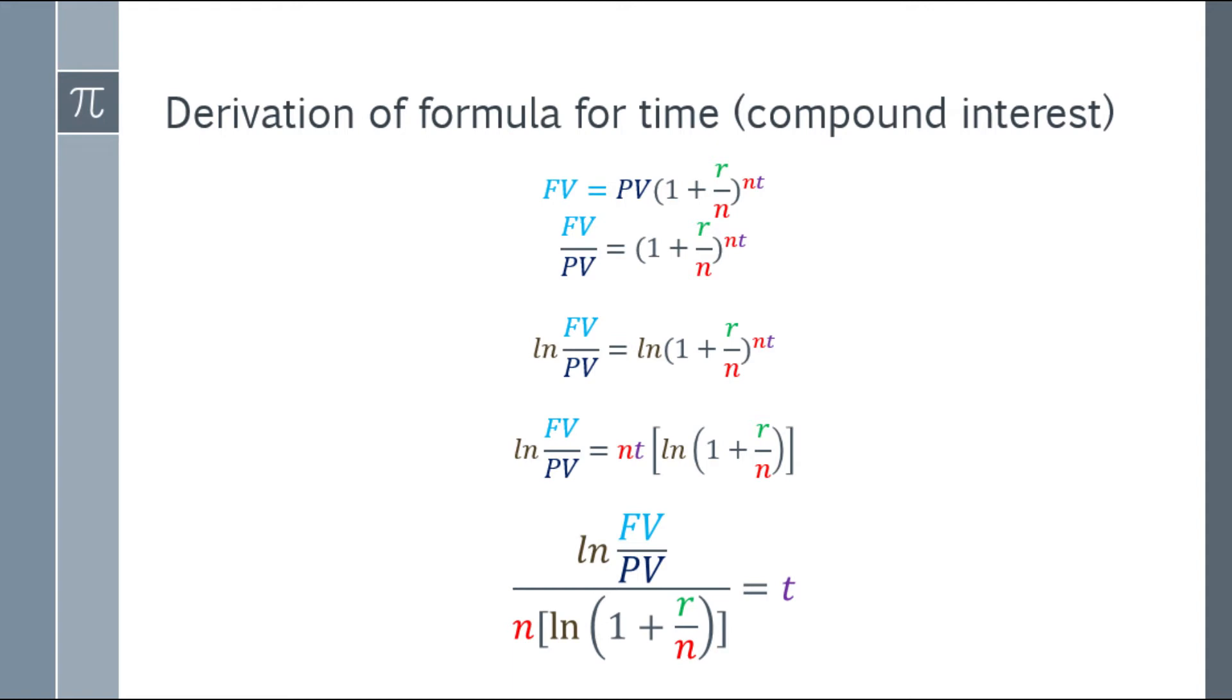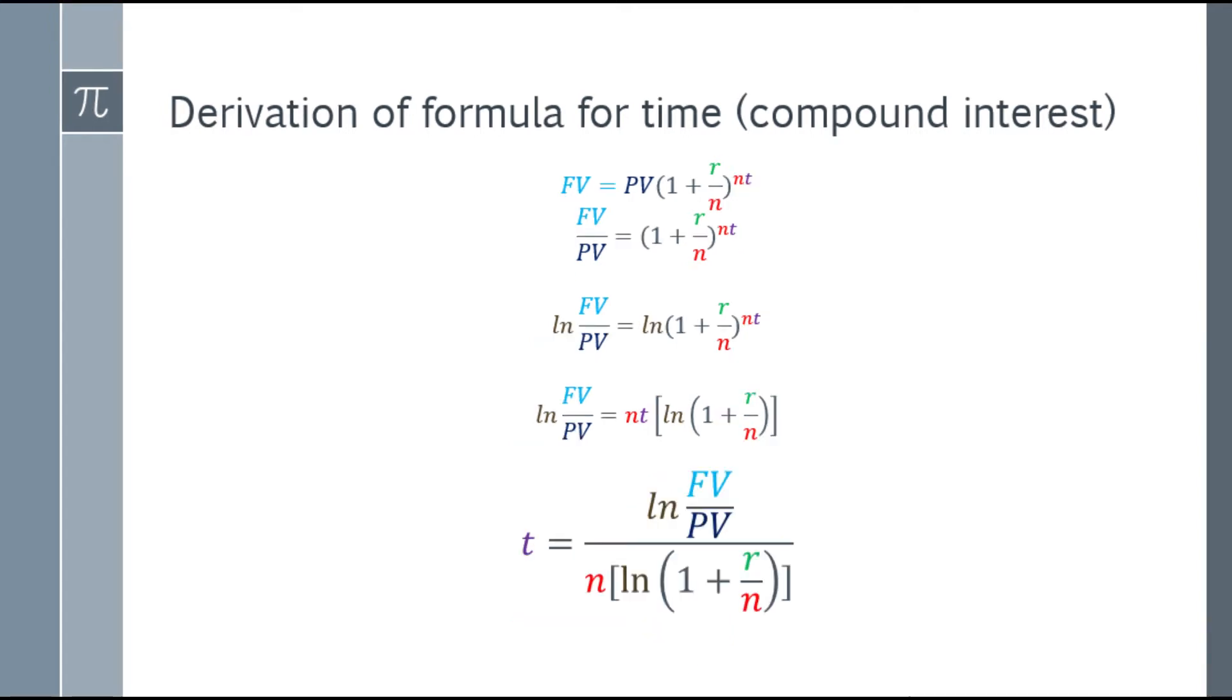Because we took Ln, we can bring down that exponent. Look at the right side of the equation. That NT can be placed at the bottom, to the left of Ln. Notice I placed NT to the left of Ln. Now, we can isolate the time. Divide both sides by N and by the quantity Ln times the quantity 1 plus R over N. Notice that only time remains on the right side of the equation. That's where the formula for time came from.